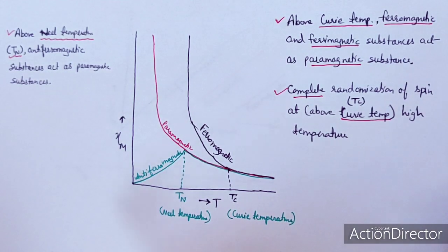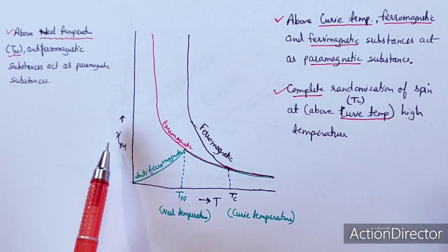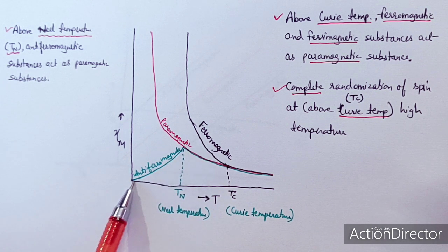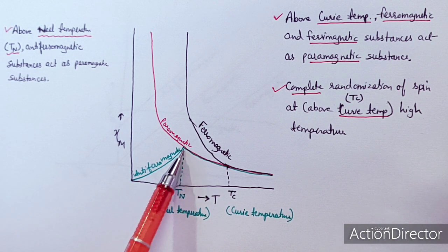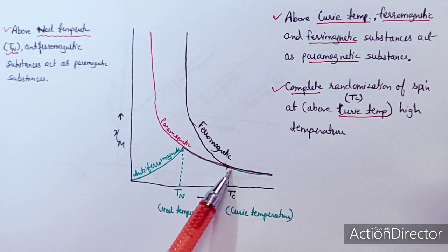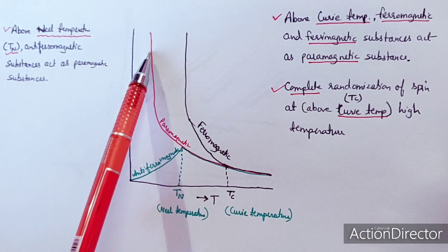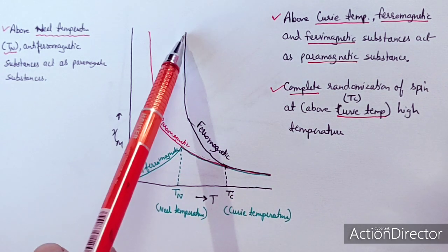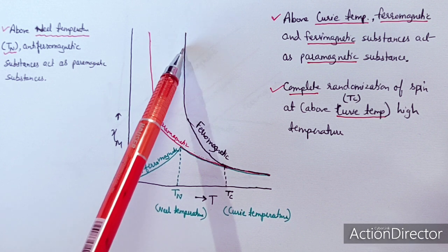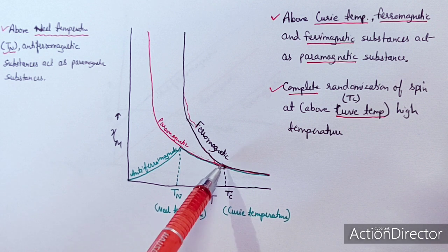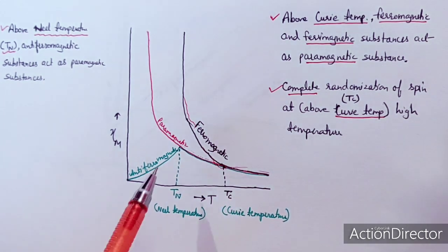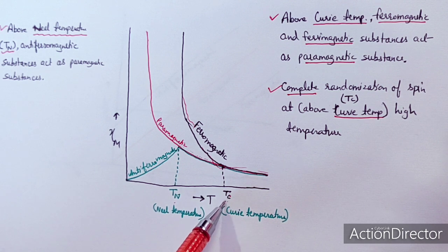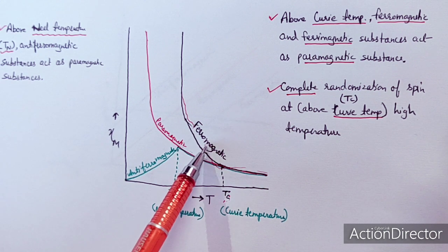In a combined plot of temperature versus magnetic susceptibility, the antiferromagnetic behavior shows susceptibility increasing with temperature up to a certain point and then decreasing. The paramagnetic material shows susceptibility decreasing slowly with temperature increase. The ferromagnetic material shows susceptibility decreasing sharply with temperature increase and then slowly thereafter. There are two key temperatures: Tc (Curie temperature) and Tn (Néel temperature).